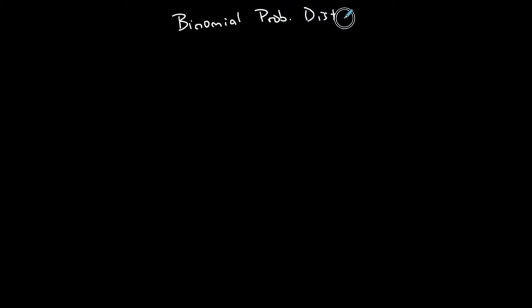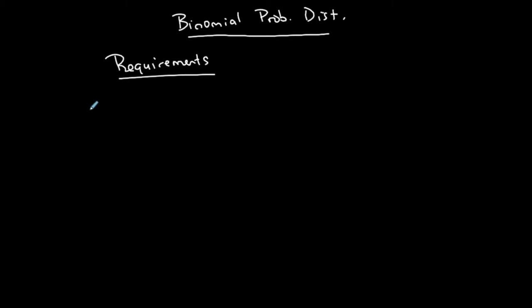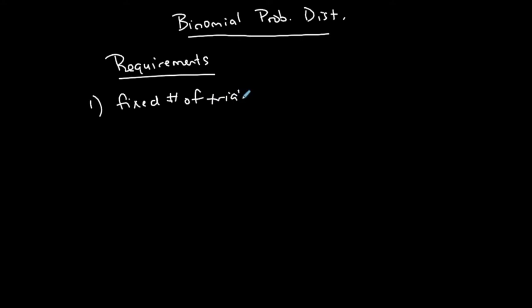This is a video to help with the binomial probability distribution. In order to have a binomial probability distribution, you have to go through the following requirements with every problem. The first requirement is that you have a fixed number of trials, and that fixed number is represented by lowercase n.